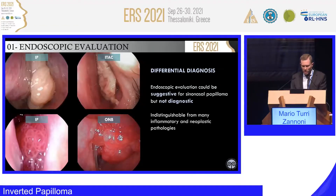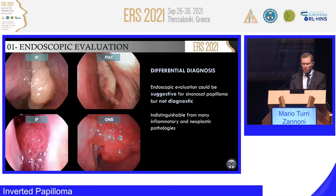Also, differential diagnosis with malignant tumors, with cancer. For example, intestinal type adenocarcinoma is much more friable — it's bleeding when touching with a suction. Olfactory neuroblastoma involves the olfactory cleft. So you can retrieve some clues and important information from endoscopy.